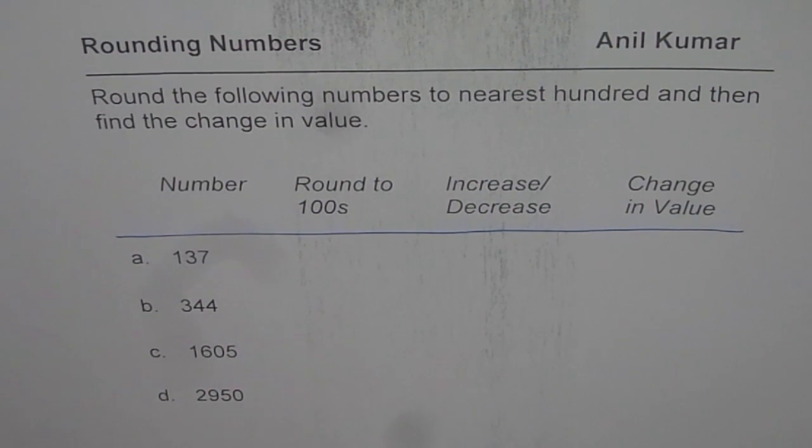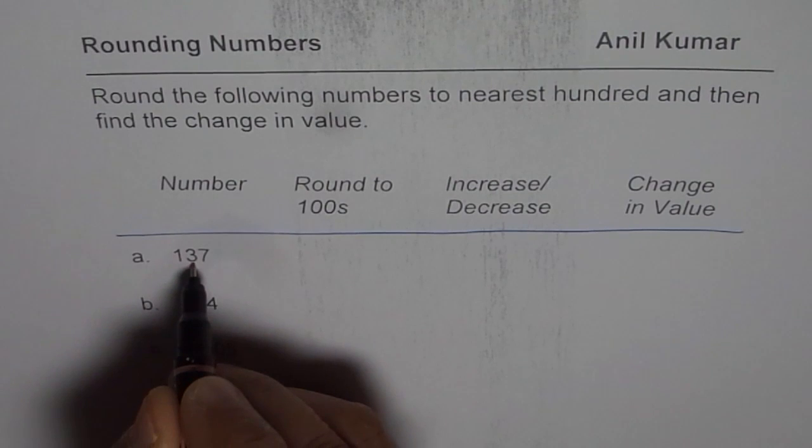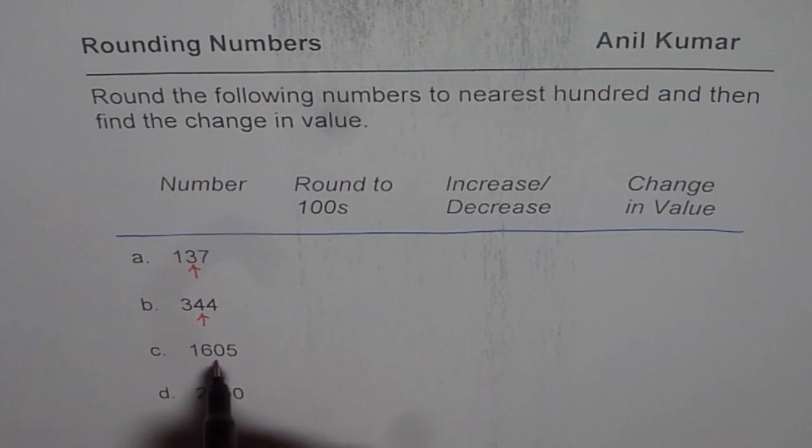Whenever you round numbers to nearest hundred, you need to check value on tens position. So this is the value which we will check and then round.